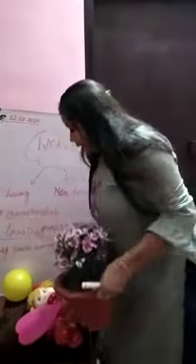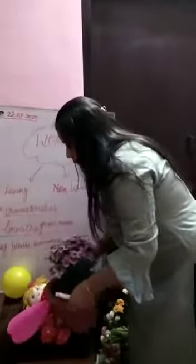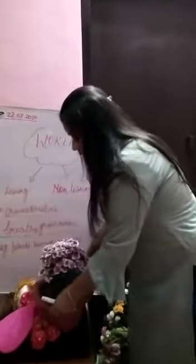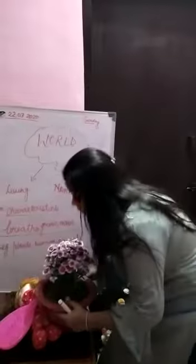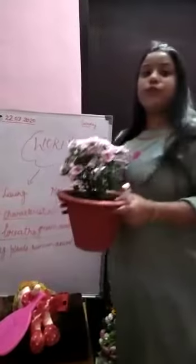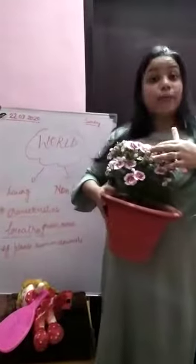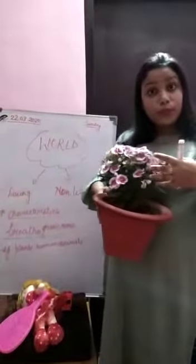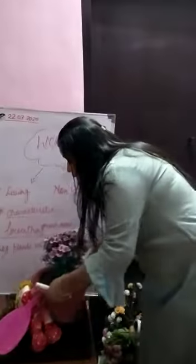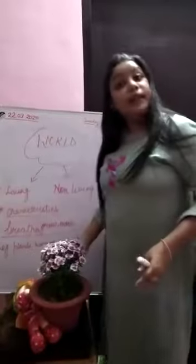Now I will give you one example of a living thing. You must be having beautiful plants at home. Here I have a plant. It grows. For growth, it requires water and air.